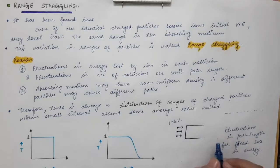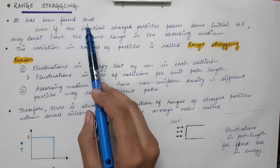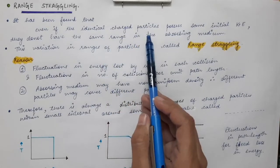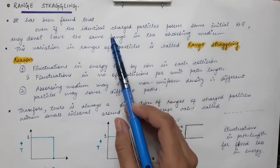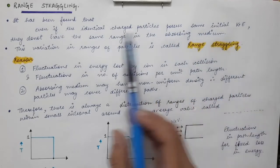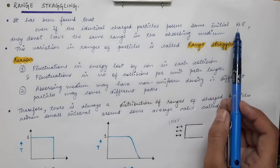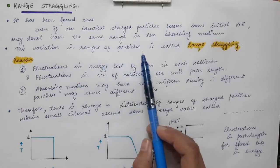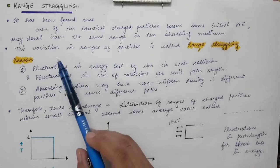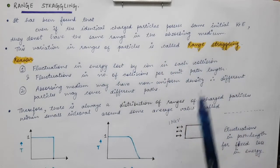But this does not happen, due to certain fluctuations. It has been found that even identical charged particles possessing the same initial kinetic energy do not have the same range in the same absorbing medium. This variation in the ranges of the particles is called range straggling — the phenomenon that all particles will not have a constant range.